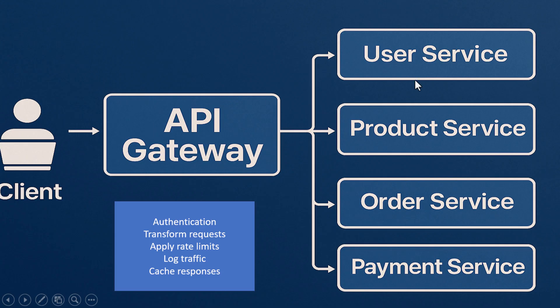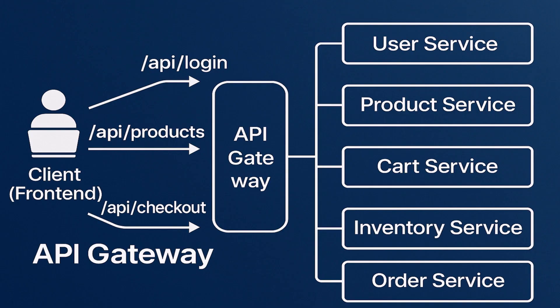The API gateway acts like a smart middleman. It sits between your front end and all your back-end microservices. Instead of calling each service directly, the client talks to the gateway, and the gateway takes care of routing the request to the right service. But it does more than just forward traffic — it can handle authentication, transform requests, apply rate limits, log traffic, and even cache responses. It becomes a centralized layer of control for all communication coming into your system.